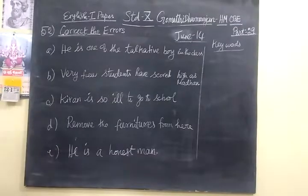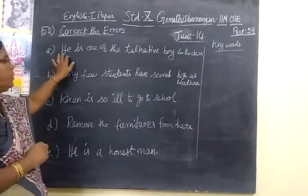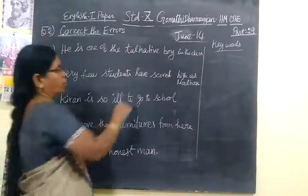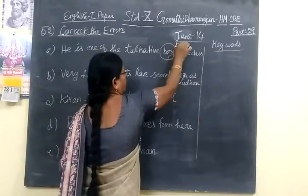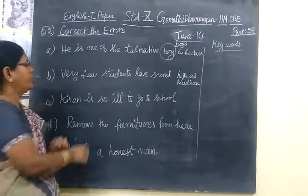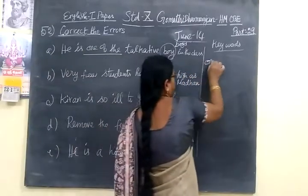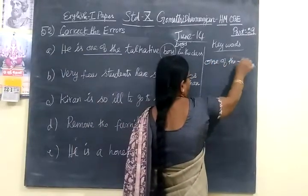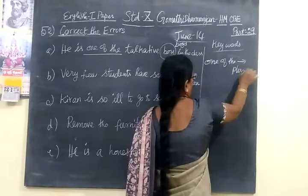Now for June 2014: 'Each one of the talkative boy.' Instead of 'boy' you have to write 'boys.' We have seen this type of question many times. The keyword is 'one of the,' so we are using only plural form — 'boys.'